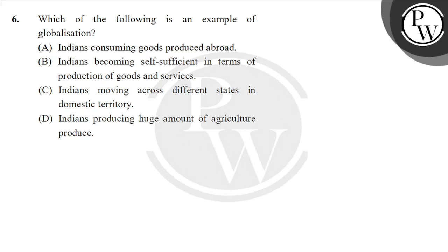Hello, this is the question: which of the following is an example of globalization? How is this an example of globalization? India is consuming goods produced and approved. Which goods are approved by production, or what is India consuming?